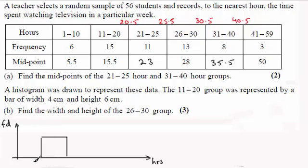This is not drawn to scale. Going from 11 to 20, remember that the lower bound will be 10.5 and the upper bound for 20 will be 20.5. We're told this has a width of 4 centimeters and a height of 6 centimeters. We've got this other group from 26 to 30. The lower bound is 25.5 and the upper bound for the 30 will be 30.5.